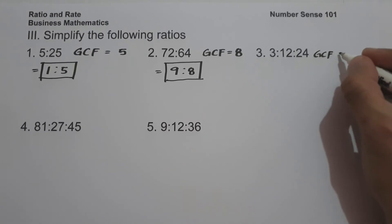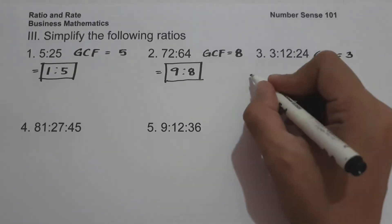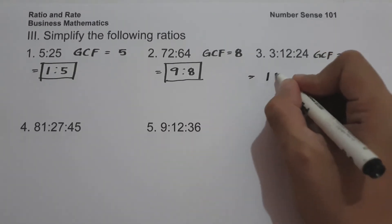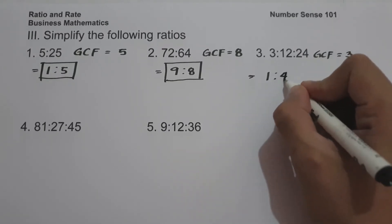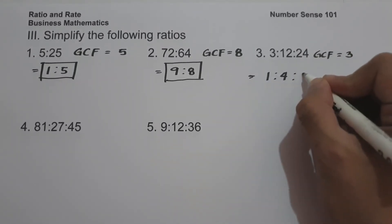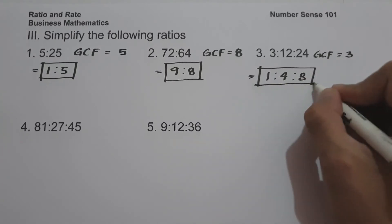On number 3, we have 3 is to 12 is to 24. The GCF of 3, 12, and 24 is 3. 3 divided by 3 is 1, 12 divided by 3 is 4, and 24 divided by 3 is 8. Therefore 3 is to 12 is to 24 simplifies to 1 is to 4 is to 8.